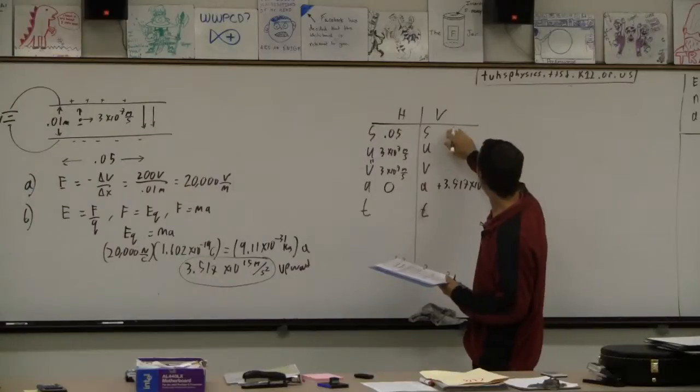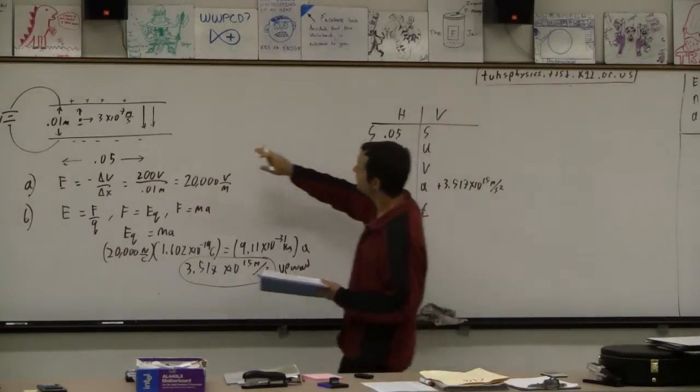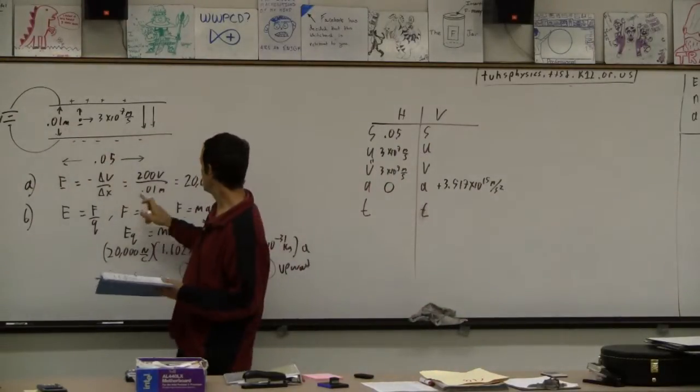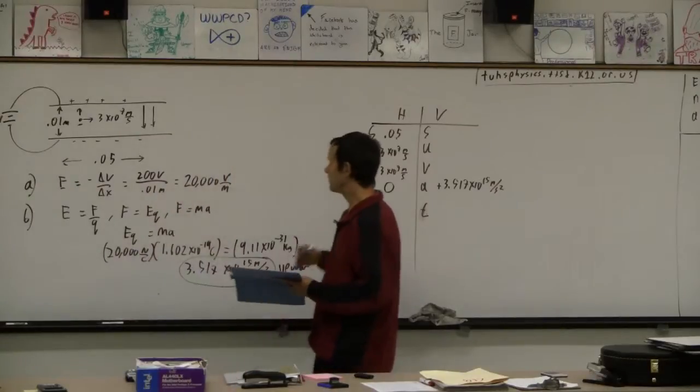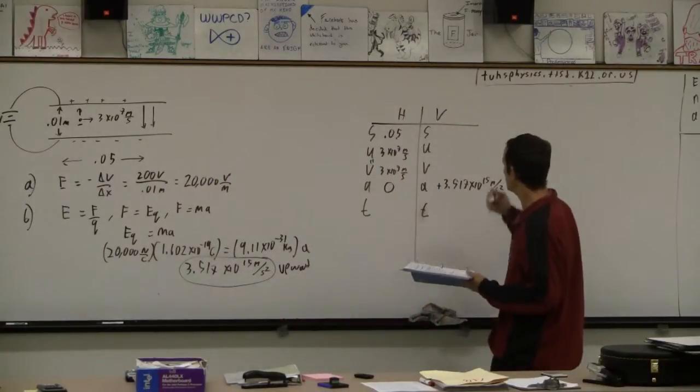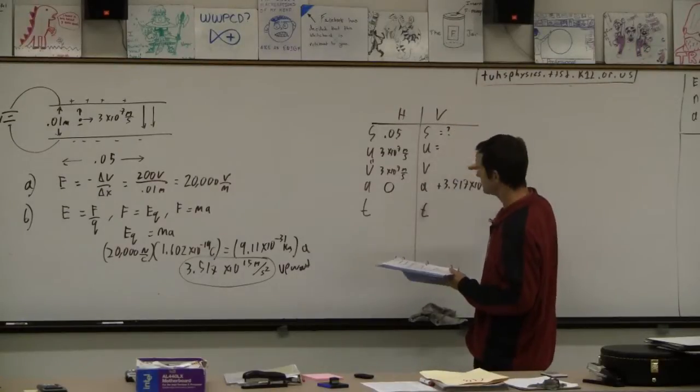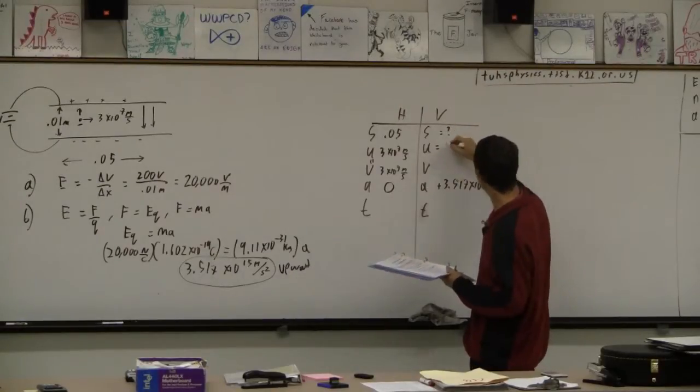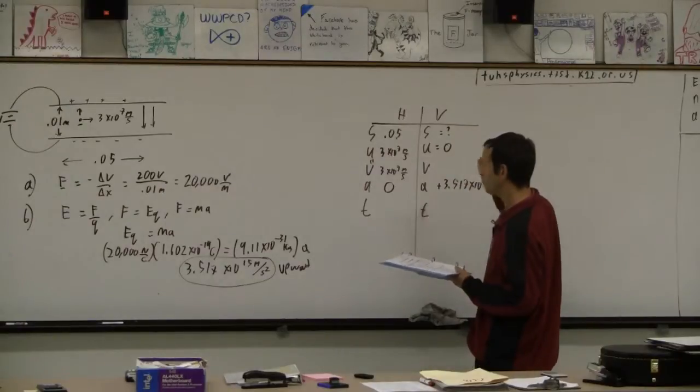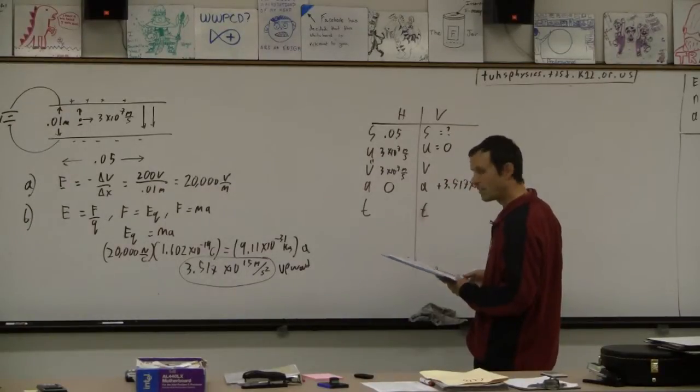Okay, vertically we don't know. We know that the separation is 0.01 meters. We used it to calculate our electric field, but it doesn't mean that the particle is going to go 0.01 meters. So this is what we're actually trying to find. I'm going to say that since it's going horizontally, that this is zero. So this is actually a cliff problem, only it's in some strange way accelerating upward.